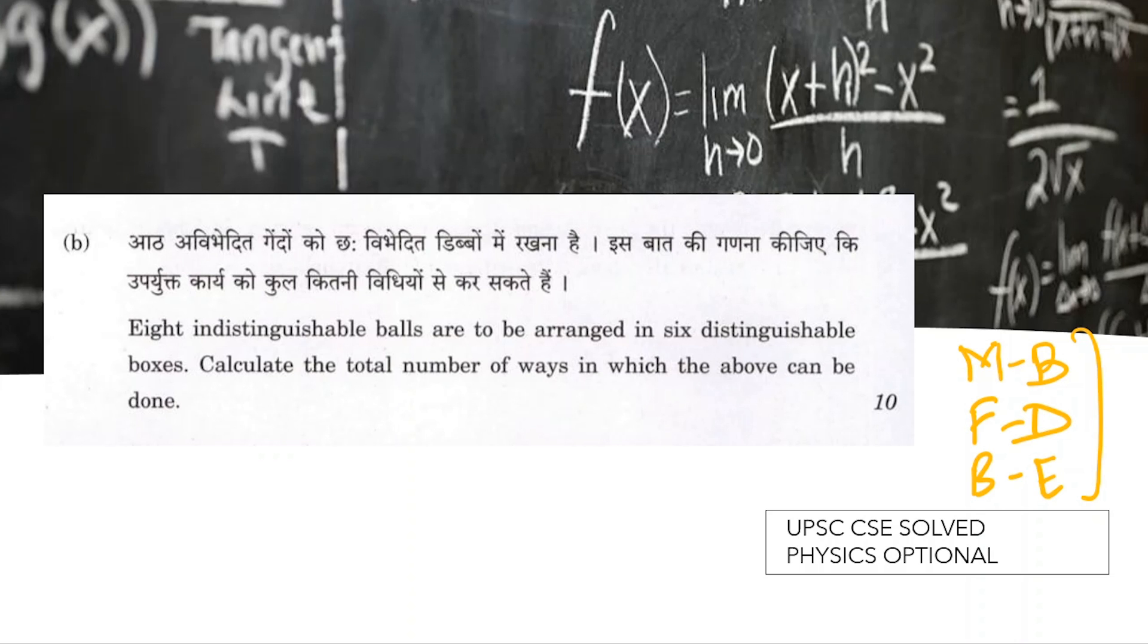So we are clear that Maxwell-Boltzmann distribution cannot be used in this question because all the particles in Maxwell distribution are distinguishable. Then we look at Fermi-Dirac.